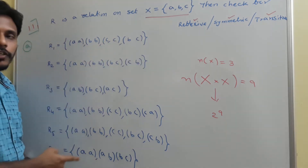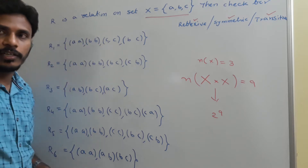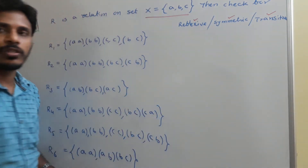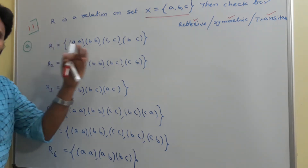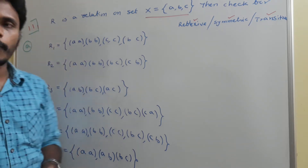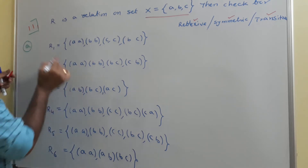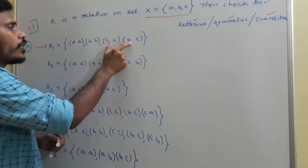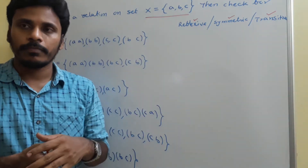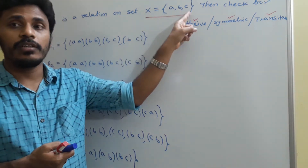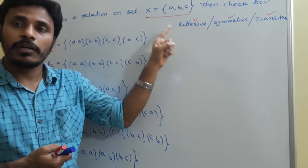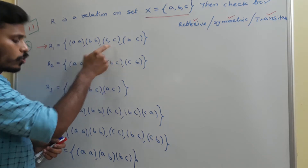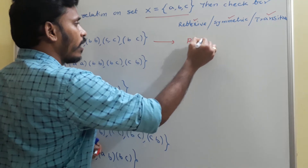For r1, first I will check reflexive. The relation r1 contains the ordered pairs (a,a), (b,b), (c,c), (b,c). Since X contains elements a, b, c, to say a relation is reflexive it must contain (a,a), (b,b), and (c,c). I have all three of those elements here, so this relation satisfies the reflexive property.